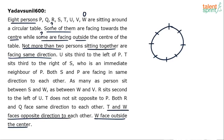T and W face opposite directions to each other — meaning they face different directions, not that they sit opposite each other. If W faces outside, T will face center. Since W is facing outwards, T should be facing center. So T's direction is now fixed as facing center across both cases.